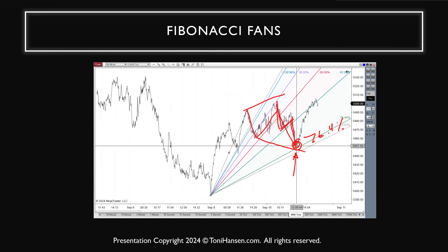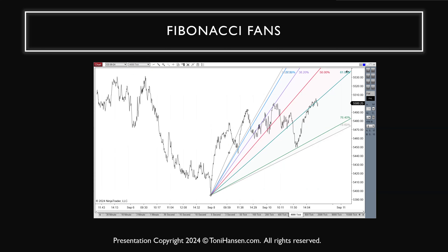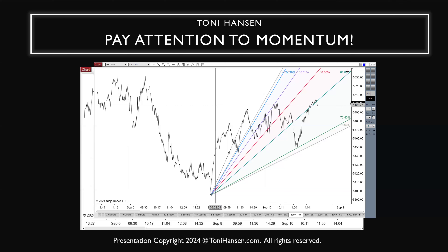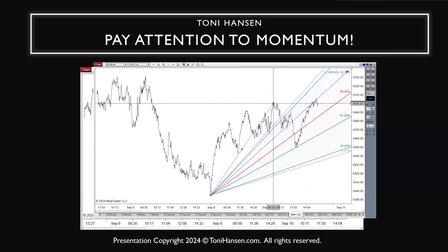Combining different retracement levels — this is about the 50% fibonacci retracement from here to here. Combined with the 76.4% fib fan, what this does is on bigger time frames like the 4000-tick ES chart, you can drop down to the smaller time frame for a strategy forming at those zones. This morning there was a double bottom — I got in coming off the first low and used the second low to build into the position for a continuation.